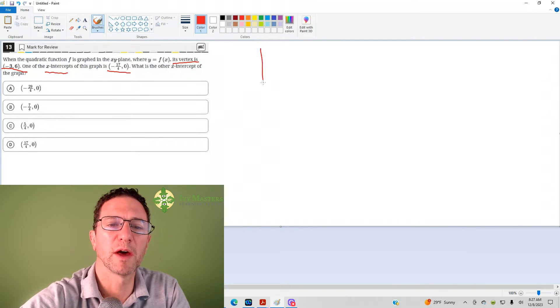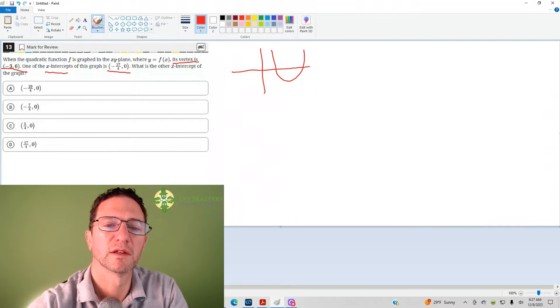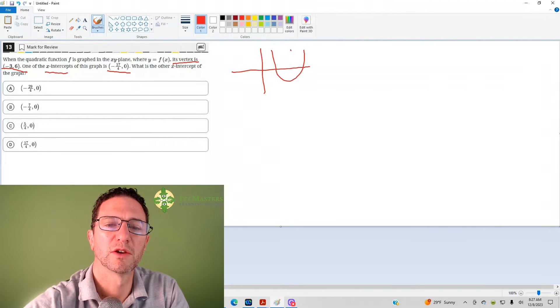Now I want you to think about a parabola for a second. So let's say your parabola goes like this. Notice what happens - parabolas are symmetric, so your axis of symmetry, which is the x-part of your vertex right here.